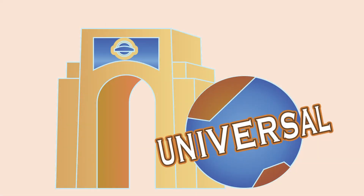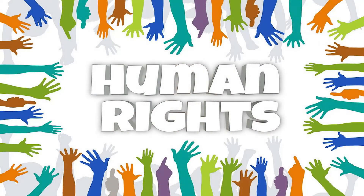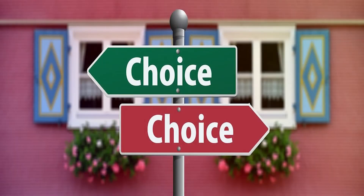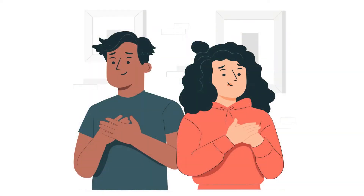Stage 6 is universal ethical principle orientation. At this stage, the person has developed a moral standard based on universal human rights. One's choices are grounded in genuine moral interest in the well-being of others regardless of who they are. The conscience at this stage is personal integrity. Kohlberg developed this theory by asking a series of moral dilemmas.